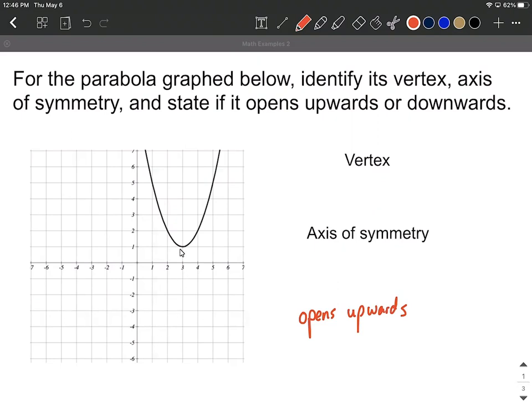Next up, the vertex. The vertex is this point, the very lowest point on our graph. We sometimes refer to this as the minimum. We need to locate that by picking out the ordered pair. That looks like the ordered pair (3, 1).